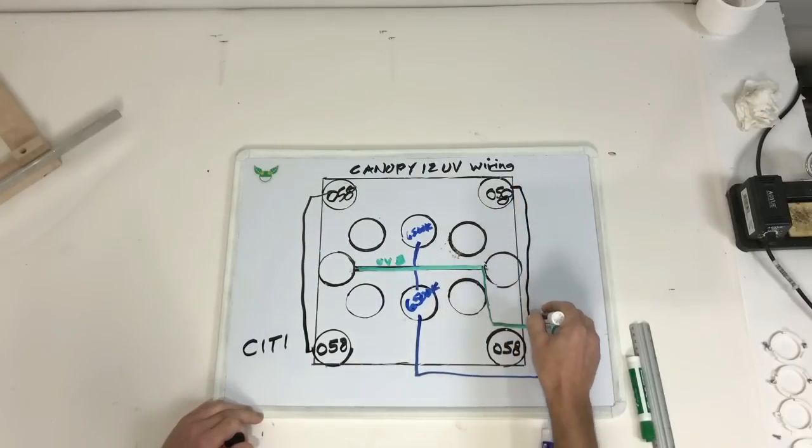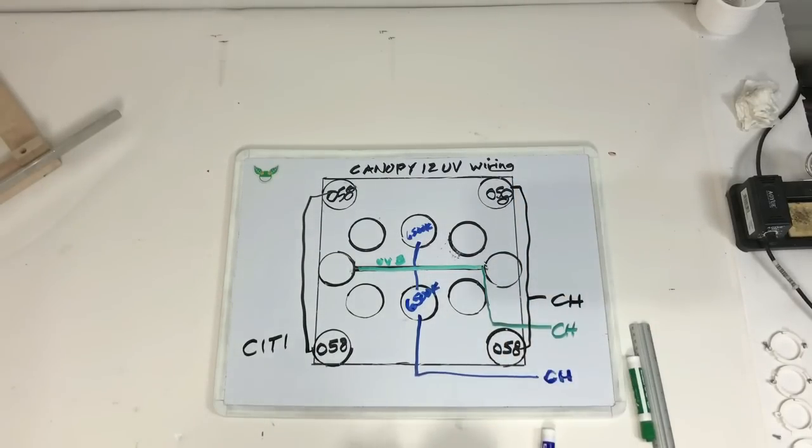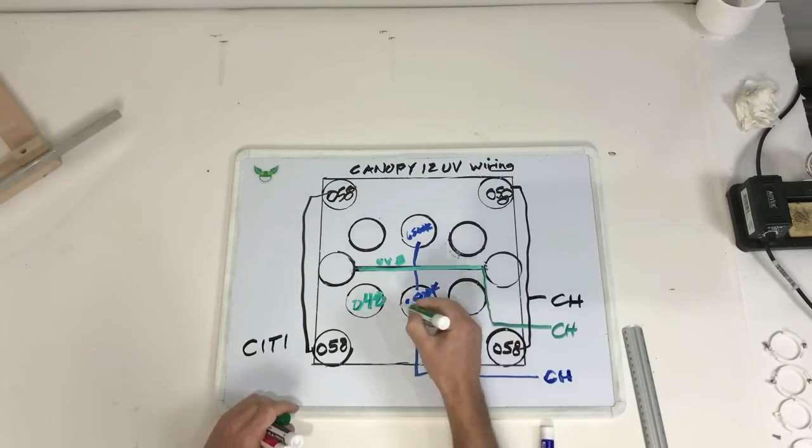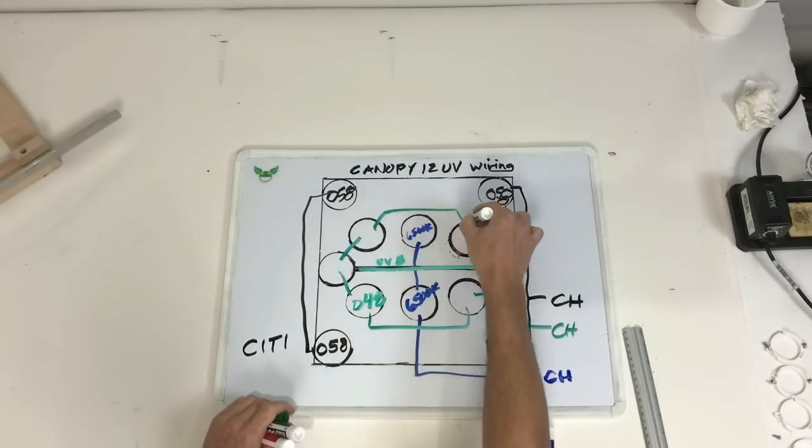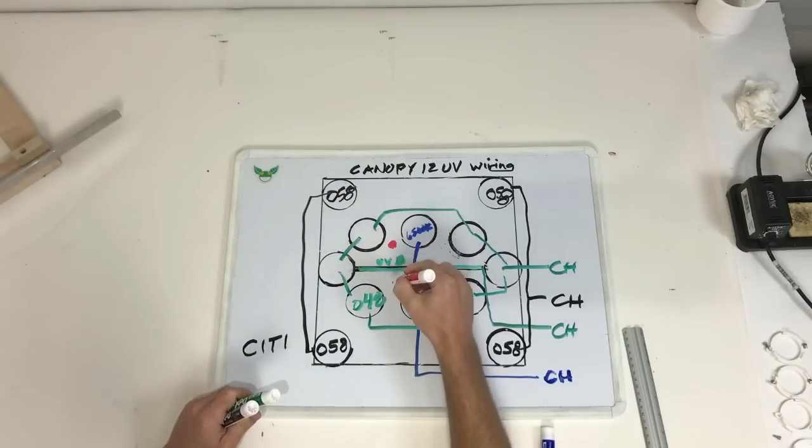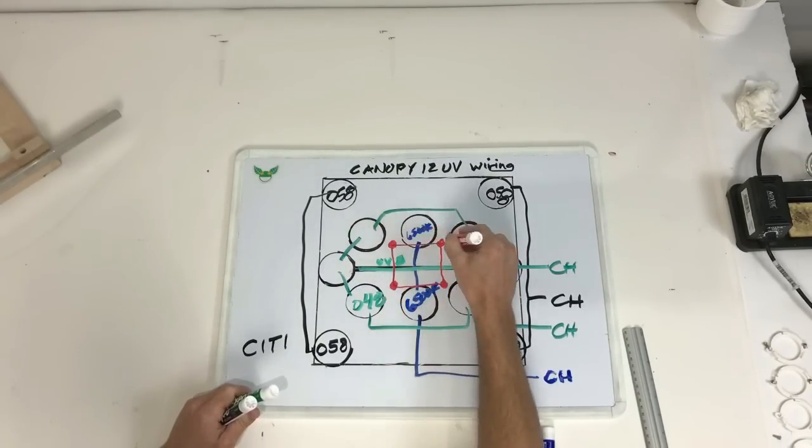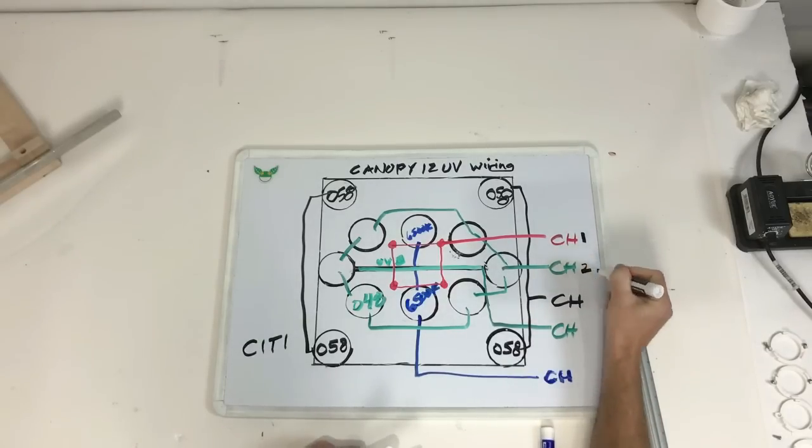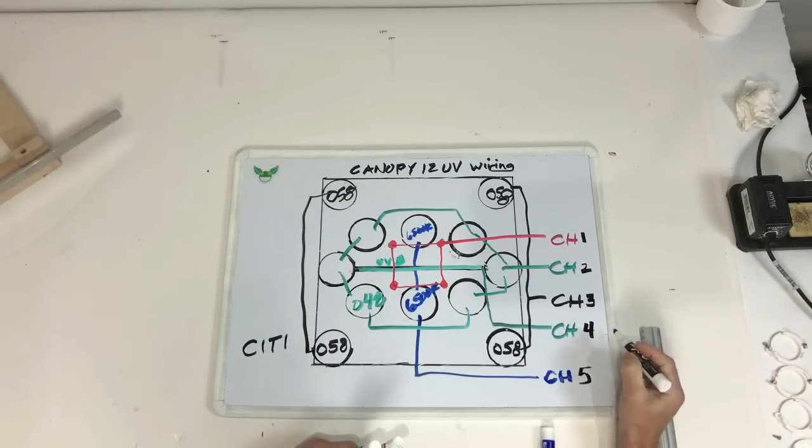We're going to have two 6500s, these big monster 058 Citizens in the corners at 3000 Kelvin, a UV bulb, and the central smaller Citizens at 3500K, followed by some far reds. That gives us five different channels.